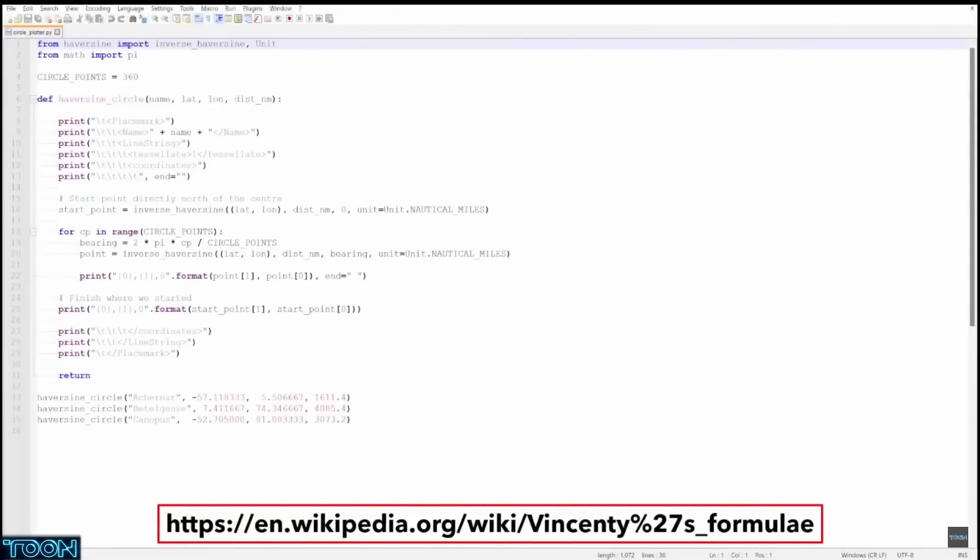Now, I would like to plot my circles in Google Earth, but the built-in circle tool on Google Earth actually uses a slightly different formula called the Vincenti formula, which takes into account the slight oblateness of the Earth.